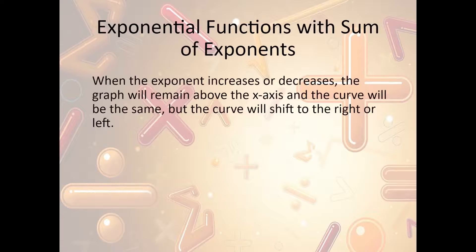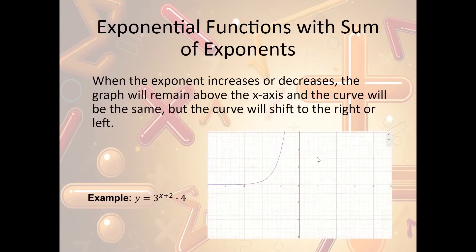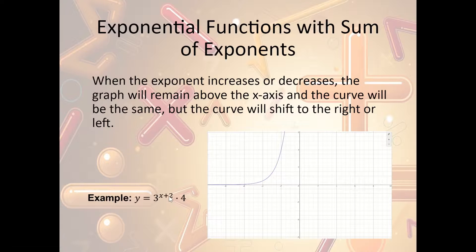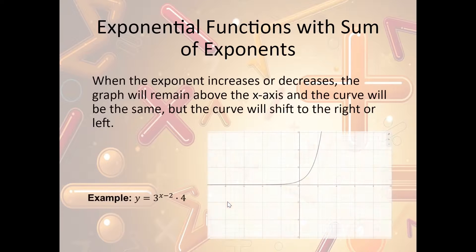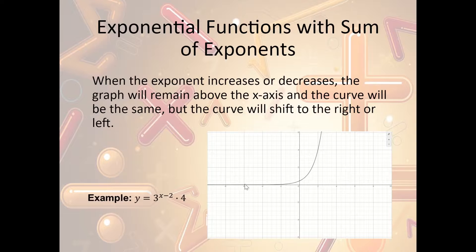What if we add something to the exponent itself? That will cause the graph to shift to the right or to the left. For y = 3^(x+2) · 4 — because the addition is inside the exponent, we always go opposite. So x plus 2 causes a shift to the LEFT two units — same graph as y = 3ˣ · 4, just slid left two. For y = 3^(x−2) · 4 — it slides to the RIGHT two units, because we always go opposite when it's in the exponent.